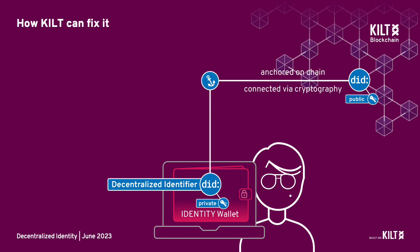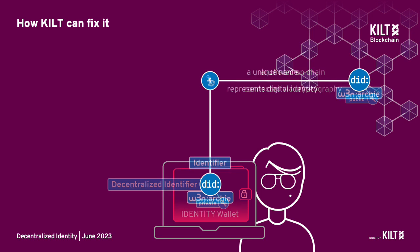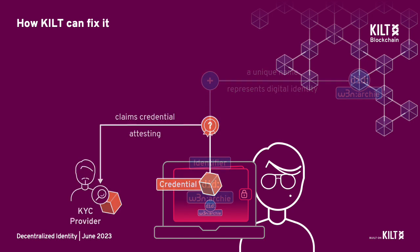When it is anchored to the blockchain, no one else can take your DID from you or turn it off, making it immutable and secure. You can also give it a unique, easily readable Web3 name like Archie, as long as no other Archie has claimed it first. And just like the physical world, you can build your identity by adding credentials.